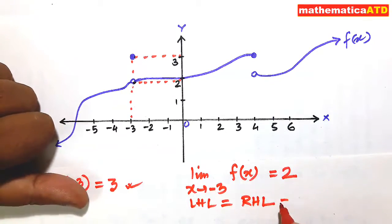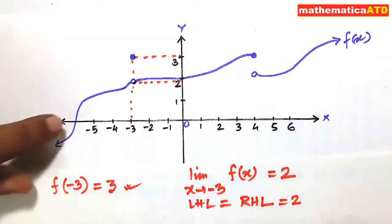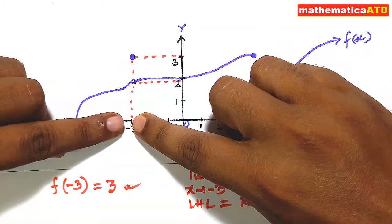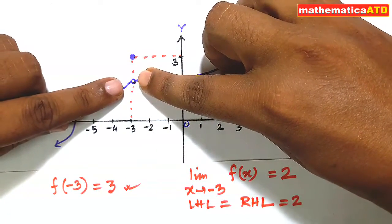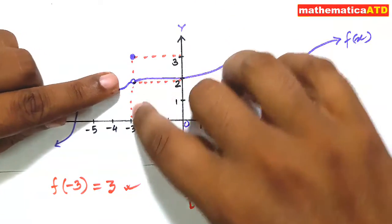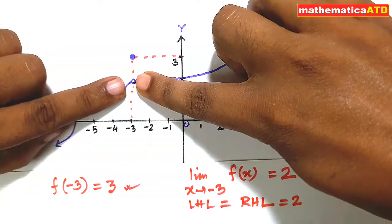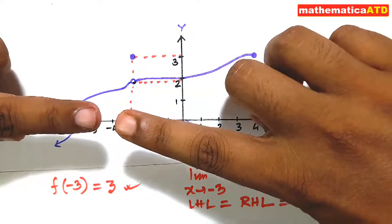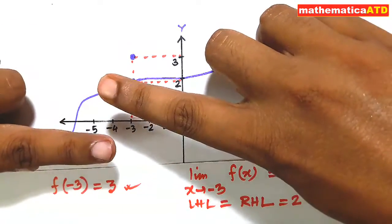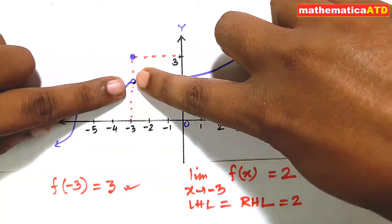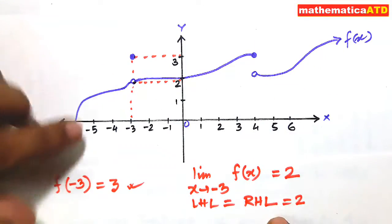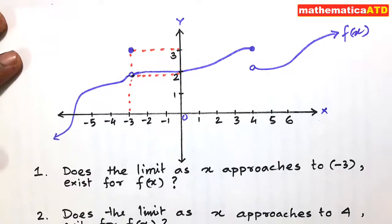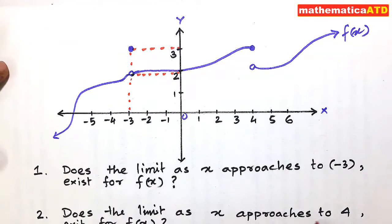When we proceed from the left or right side of x = -3, we get more and more closer to the ordinate value y = 2. These two fingers are face to face — meaning they are approaching each other and meeting at the same ordinate value. So the limit exists: LHL = RHL = 2.